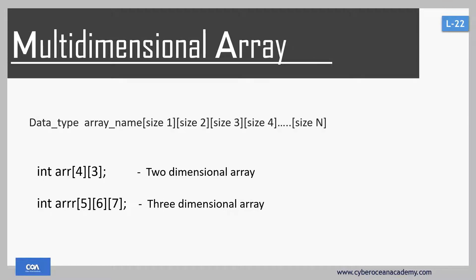So first of all, what is a multi-dimensional array? In a one-dimensional array, it is a collection of homogeneous elements — that is, elements of the same data type. A multi-dimensional array is an array of arrays. Where we have simple data in a one-dimensional array, in a multi-dimensional array we use an array as data for another array — so it is an array of arrays.